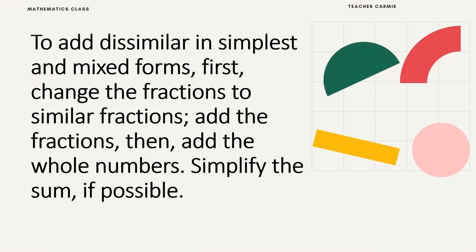To add similar and mixed forms, first change the fractions to similar fractions, add the fractions, then add the whole numbers. Simplify the sum if possible.